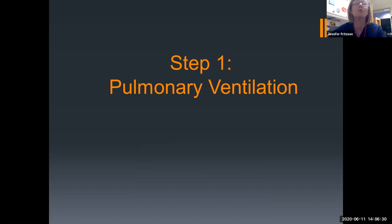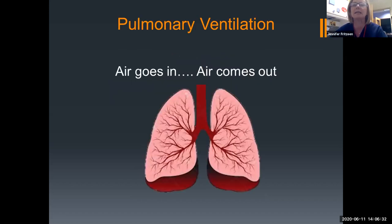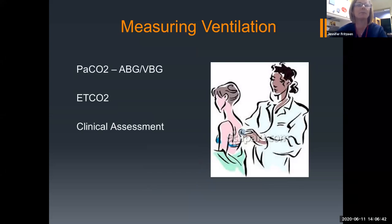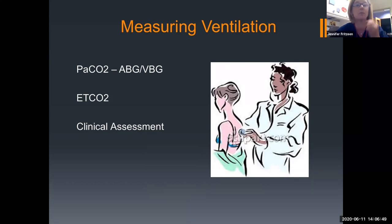Step one is pulmonary ventilation. That's really easy — air goes in, air comes out. There are lots of ways to measure ventilation. The best way is by good old clinical assessment. Outside of clinical assessment, we can do end-tidal CO2, either on a ventilated patient or through a nasal cannula. If you want to draw a blood gas, whether arterial or venous, that'll give you your PaCO2 in order to measure ventilation.